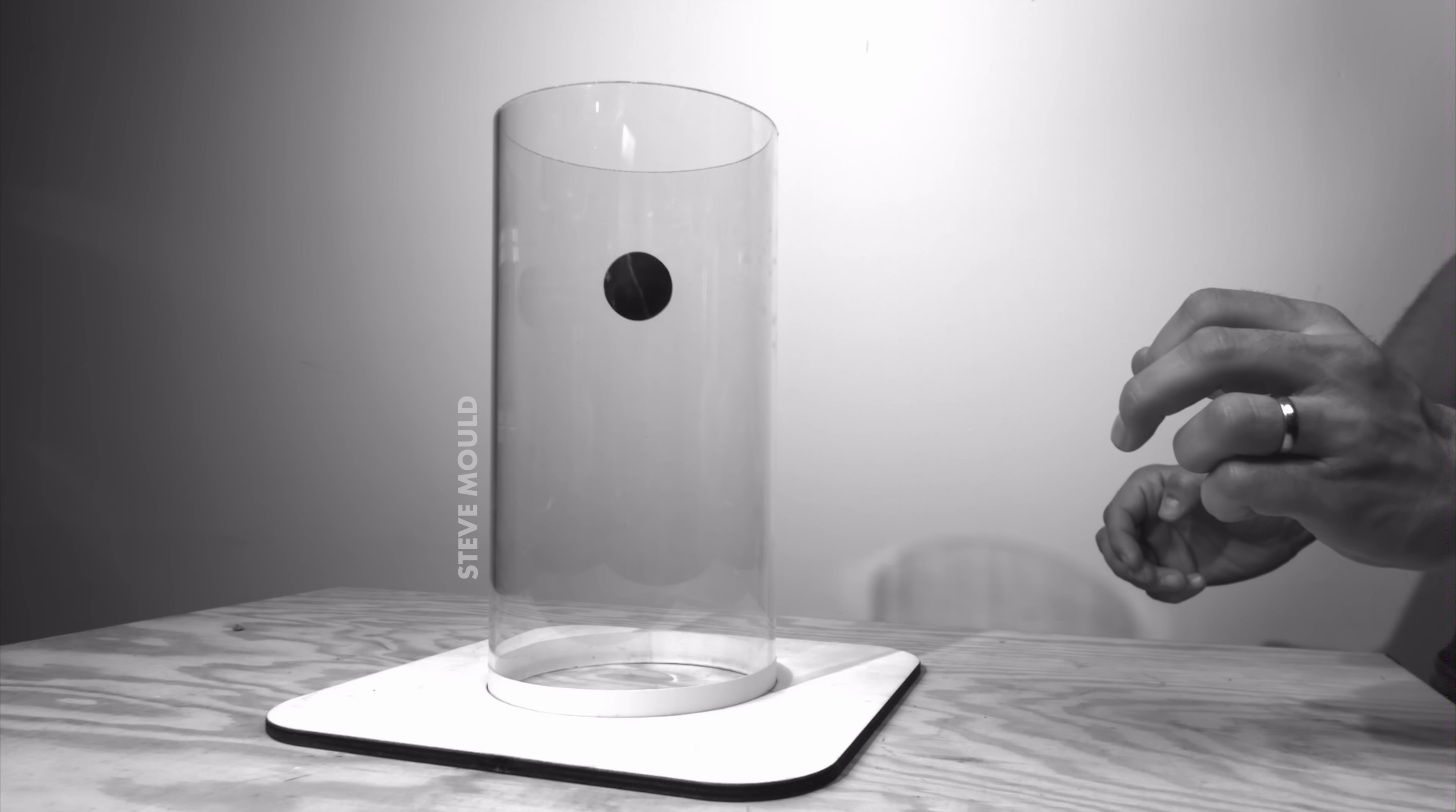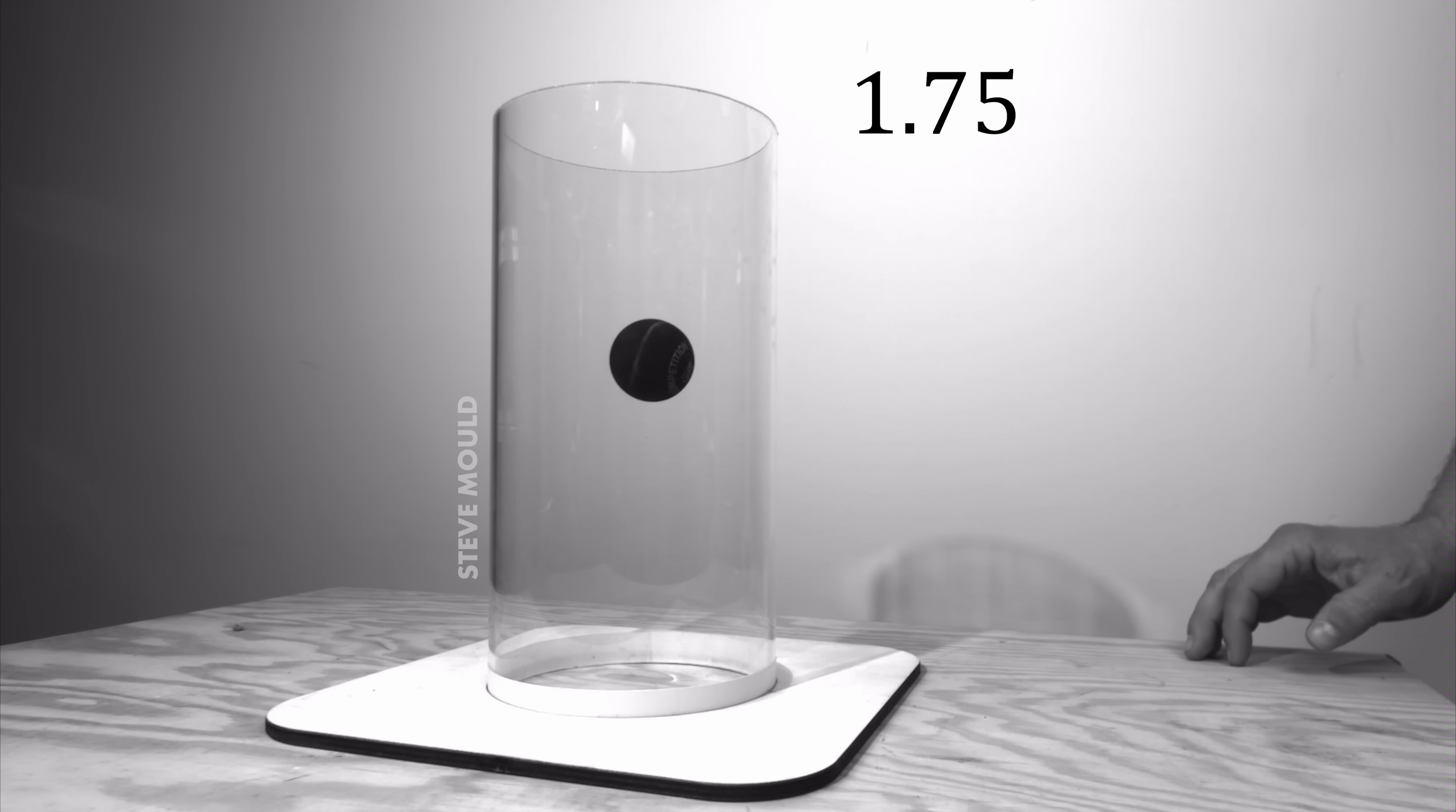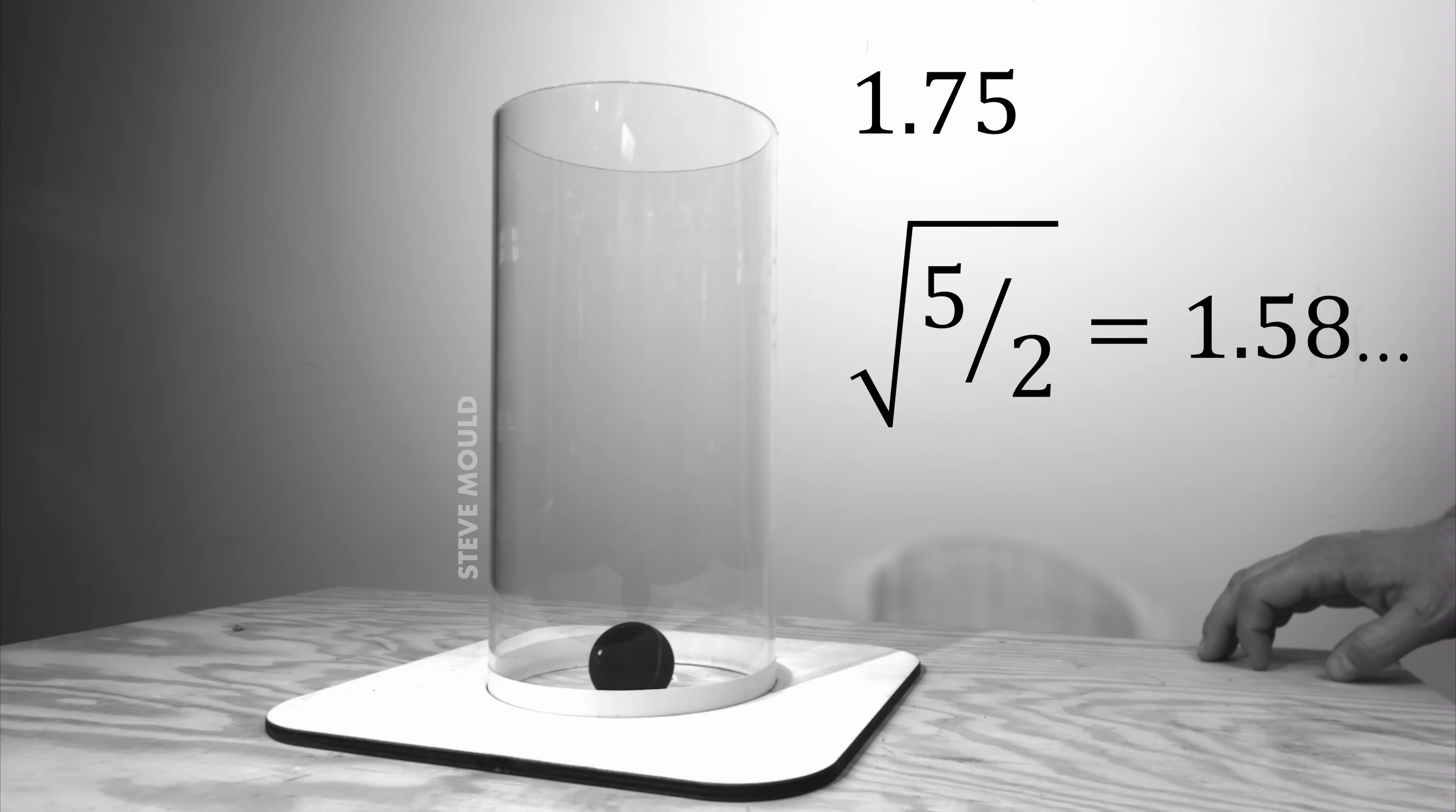Analyzing this video, the ratio seems to be about 1.75 to 1. In other words, the ball goes around the cylinder 1.75 times for every one vertical oscillation of the ball. We expect it to be the square root of 5 divided by 2, but that's actually about 1.6. So we're a little bit off. But actually, a squash ball isn't perfectly hollow.